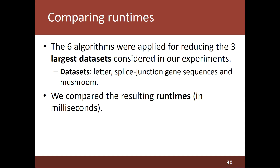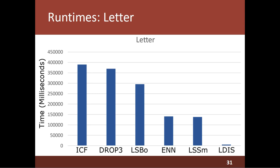We also compared the runtimes of the six algorithms. In our experiments, these algorithms were applied for reducing the three largest datasets considered in our experiments: Splice Junction Gene Sequences and Mushroom. We compared the resulting runtimes in milliseconds. This chart represents the runtimes of the six algorithms considering the Ladder dataset. We can see that LDIS has the lowest runtime among the considered algorithms, and there is a significant difference between the runtime of LDIS and LSSM, which is the second fastest algorithm in this dataset.